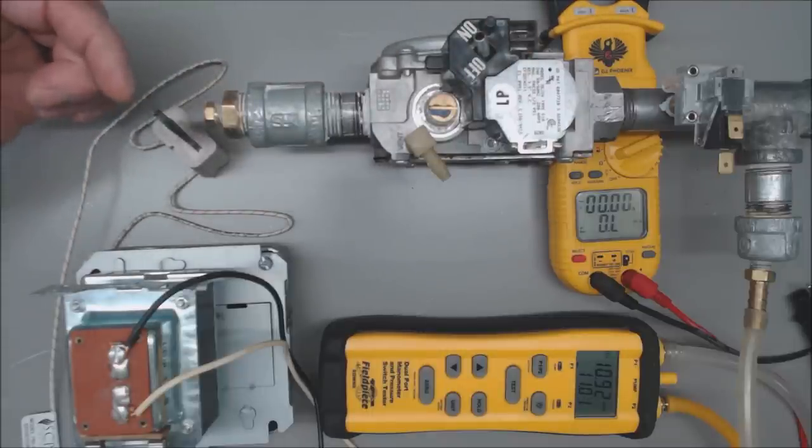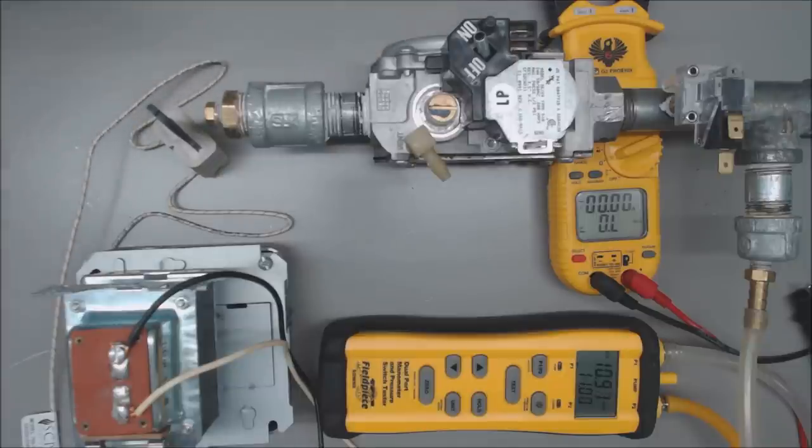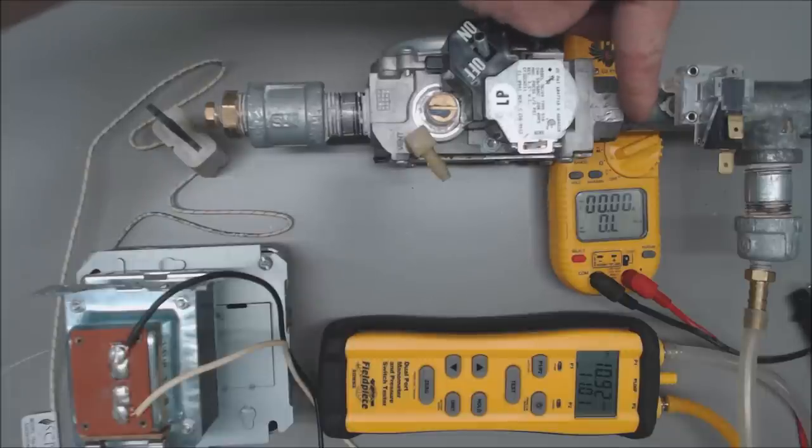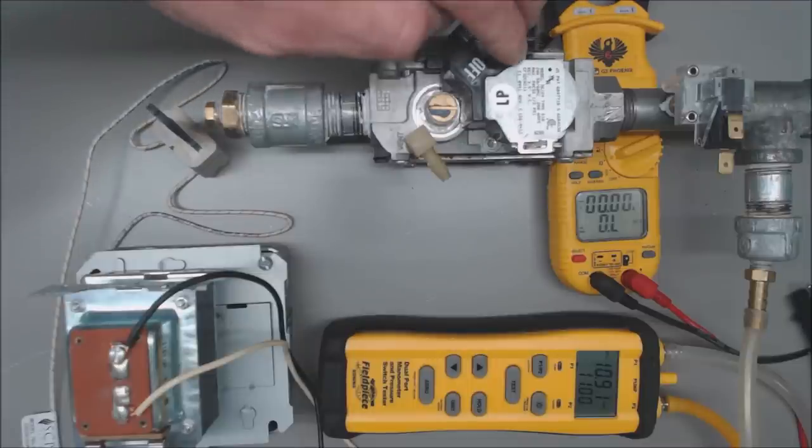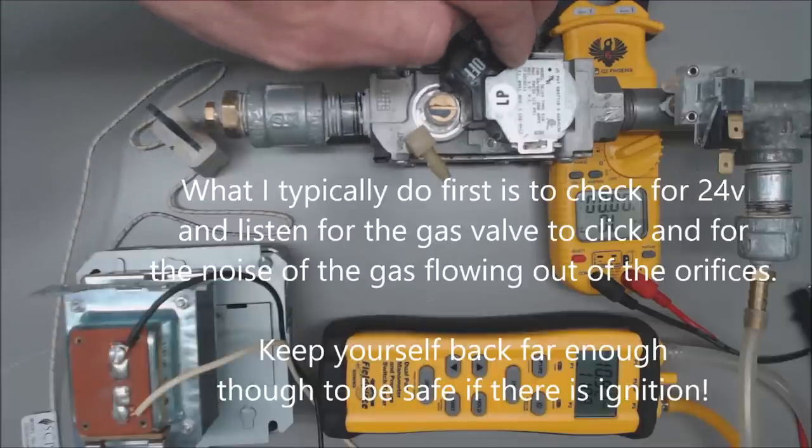So if you do have a hot surface igniter turning cherry red but you do not have gas flow, then what you need to do is check your inlet gas pressure first. As well, you're going to check your outlet gas pressure and verify that you have 24 volts heading into the electrical gas valve.